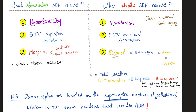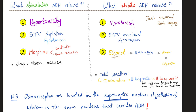What stimulates antidiuretic hormone release? Hypertonicity, volume depletion, and some medications. Hypertonicity means increased osmolality of your plasma — if your plasma is super concentrated, ADH reabsorbs pure water to dilute it and bring tonicity back to normal. Extracellular fluid volume depletion also increases ADH release so you reabsorb more water to increase blood volume. Conversely, hypotonicity and ECF volume overload cause inhibition of ADH release.